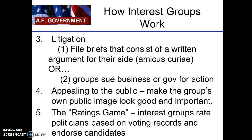Interest groups can also be involved in litigation — suing businesses or government for action. Brown v. Board of Education was paid for by the Legal Defense Fund of the NAACP, which is an example of the NAACP interest group using litigation. They can also file amicus curiae briefs — meaning 'friend of the court' — which lay out an argument for the side they believe in. These are written by people not directly connected to the court case, just an interested party. We'll study that more in the judiciary unit.